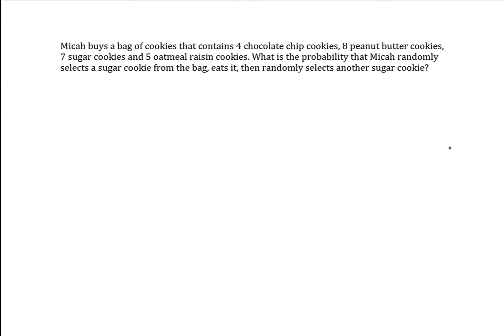Micah buys a bag of cookies that contains four chocolate chip cookies, eight peanut butter cookies, seven sugar cookies, and five oatmeal raisin cookies. What is the probability that Micah randomly selects a sugar cookie from the bag, eats it, then randomly selects another sugar cookie?